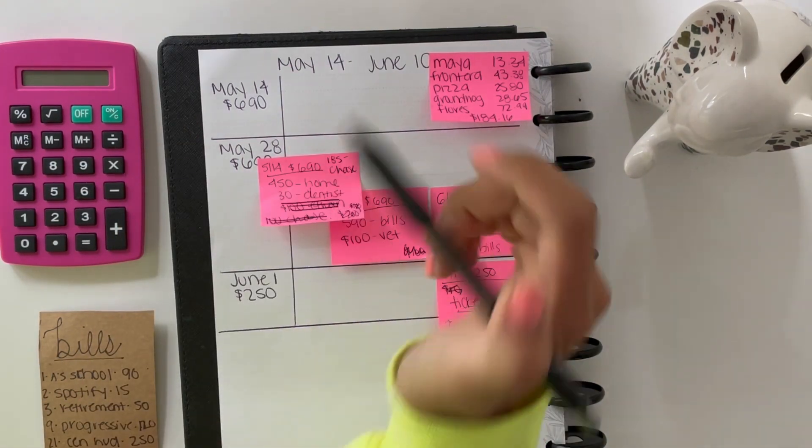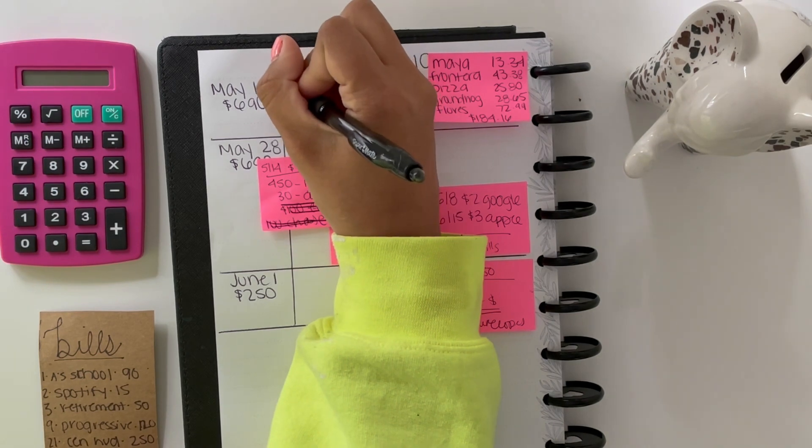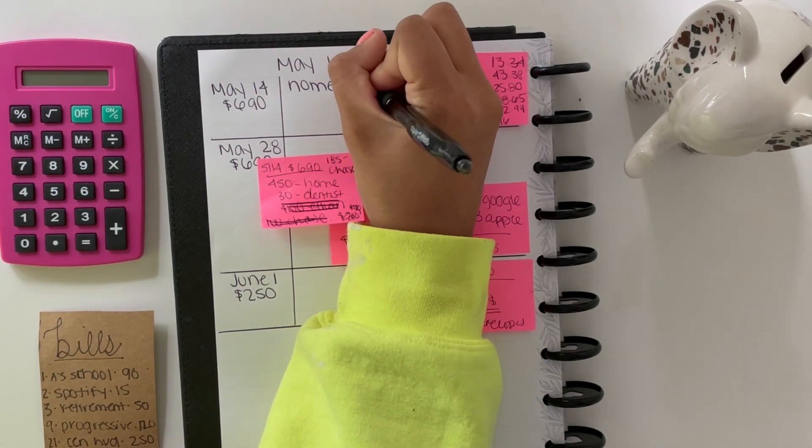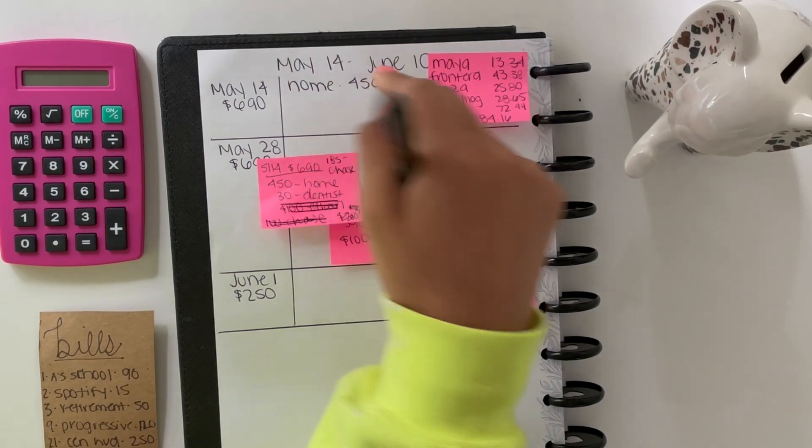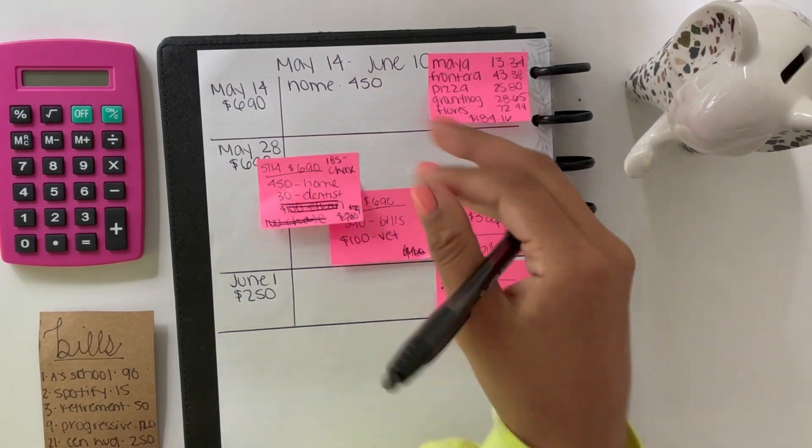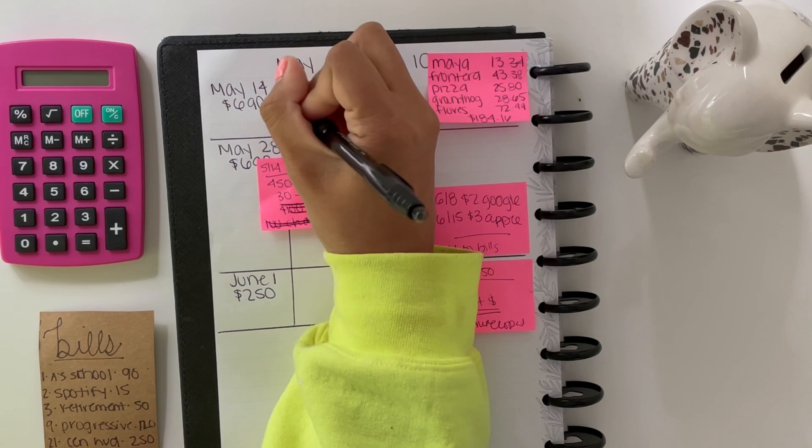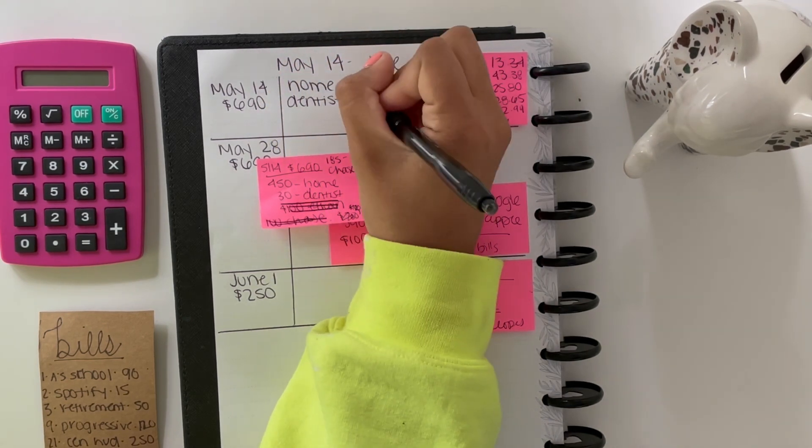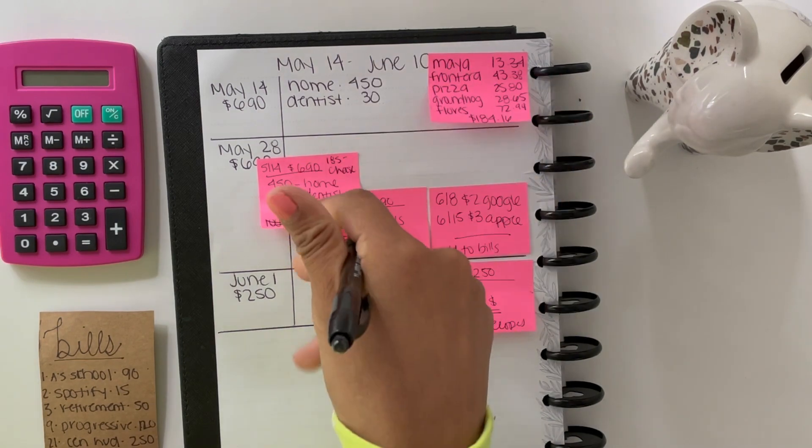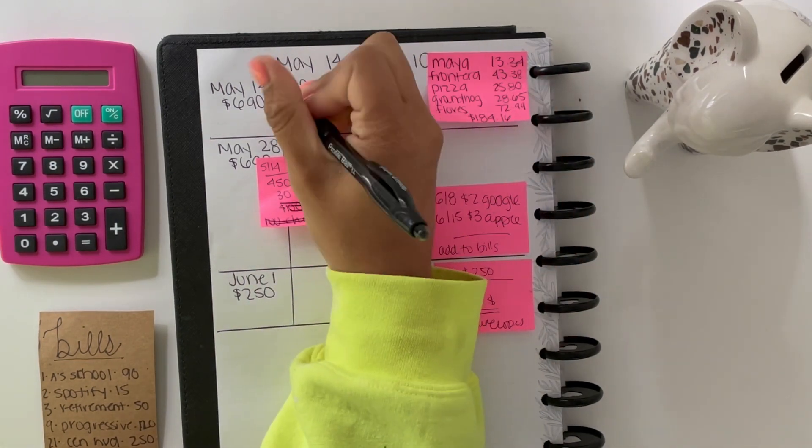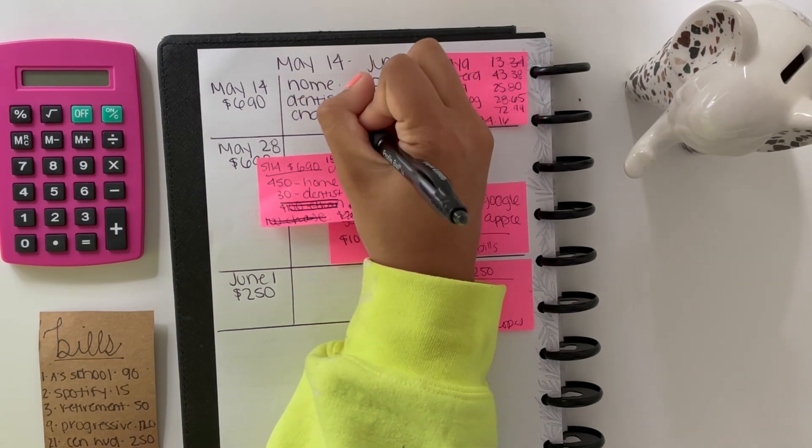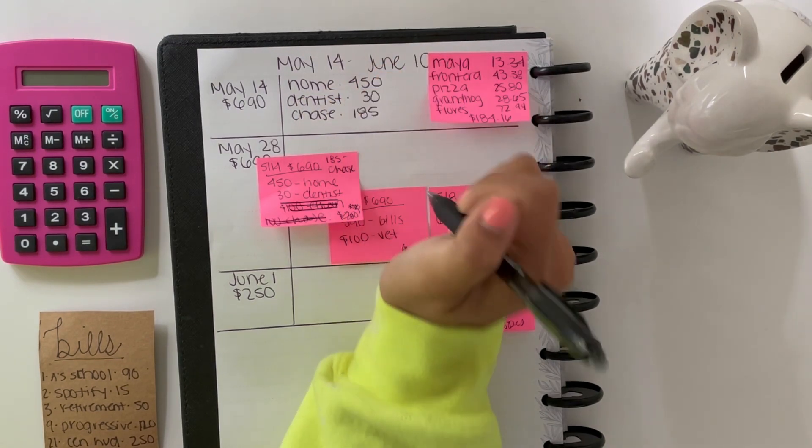I'm going to show you how I divide it and how my sticky notes work. For home it's $450, and you'll see how I break that down in my June sinking funds video. For dentist it's $30. This is a bill that just came up because I owed them money. And for Chase it's going to be $185.